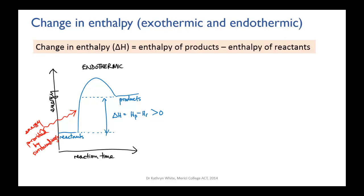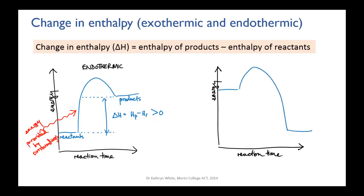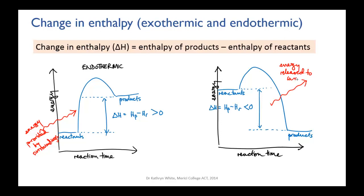If the change in enthalpy is negative, it means the reactants contained more energy than the products, and energy must have been released into the surroundings as the reactants are turned into the products. This will cause the surroundings to heat up. We call this kind of reaction exothermic.